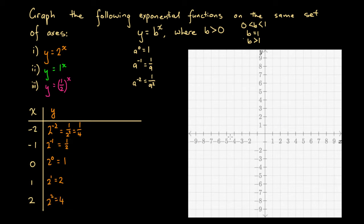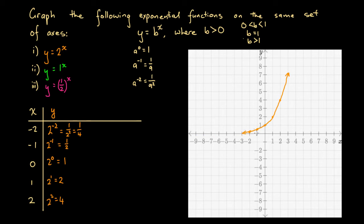Let's graph these points. At x equals minus 2, y equals a quarter — that's 2 units left of the origin and a quarter unit up. At x equals minus 1, y equals half. At x equals 0, y equals 1. At x equals 1, y equals 2. And at x equals 2, y equals 4. Connecting these, we get an exponential curve. As x gets very large and negative, y gets closer and closer to 0 but never reaches it — that's our asymptote. On the right-hand side, the y values shoot up for small increases in x.